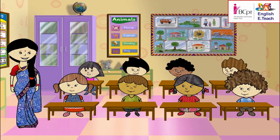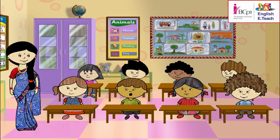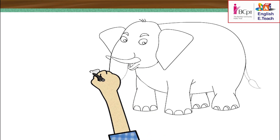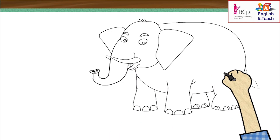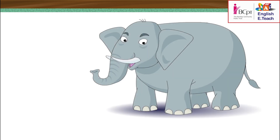Jenny, you can try. An animal with a long trunk and a short tail. Elephant. That's correct. An elephant has a long trunk and a short tail.